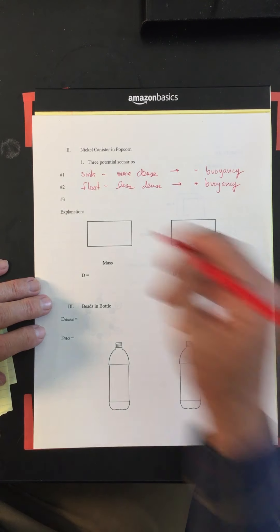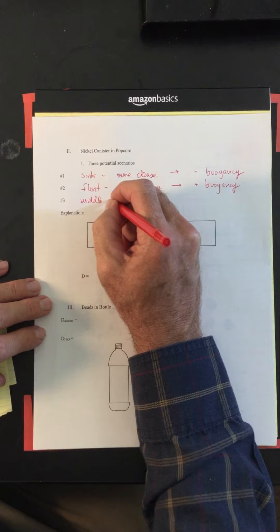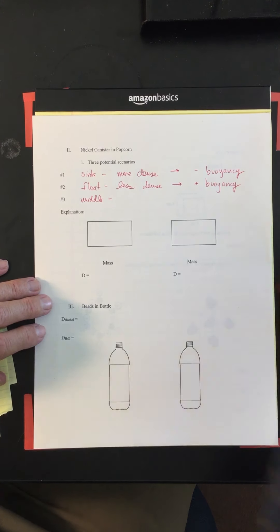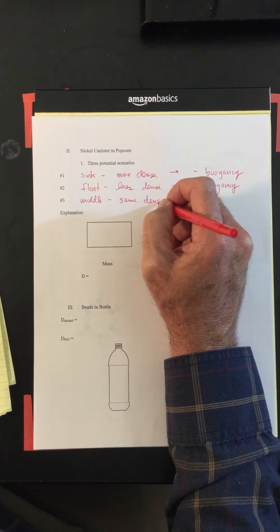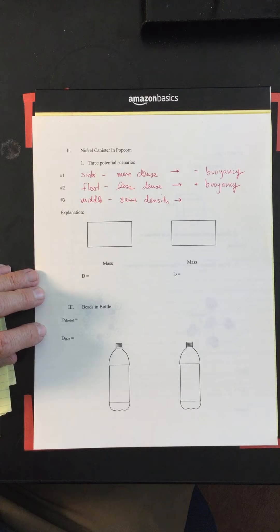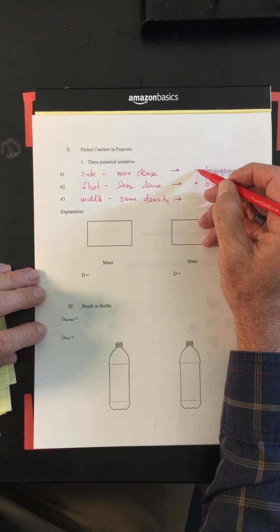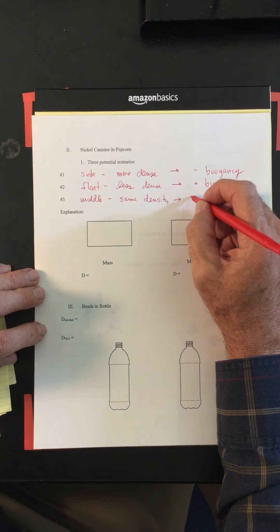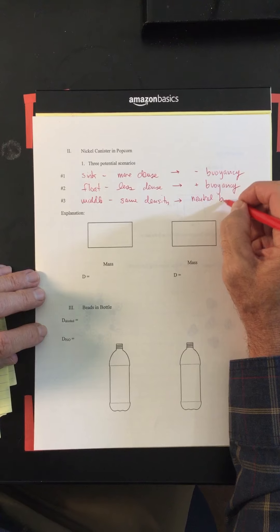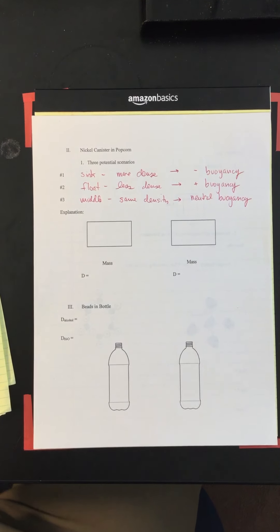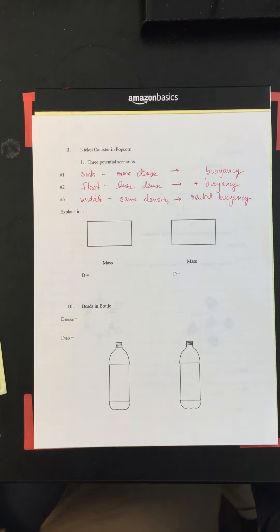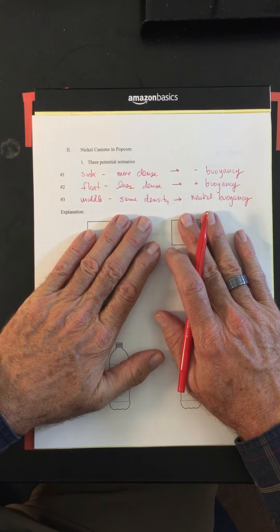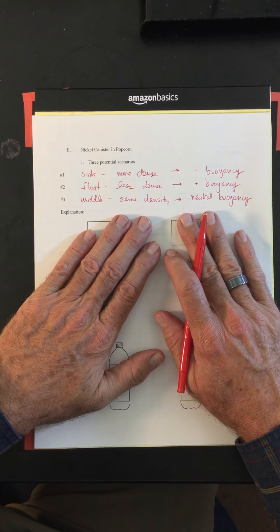There's a third possibility though — it could stay in the middle. And if it stays in the middle, that means it's going to have the same density as the surrounding environment. If we have things that are positive and things that are negative, the other possibility is going to be neutral — neutral buoyancy. So I'd like you to stop this video now and go to the video titled 'Nickels in Popcorn' and watch that. Do not go on until you watch that video, so press pause now.